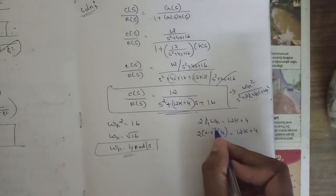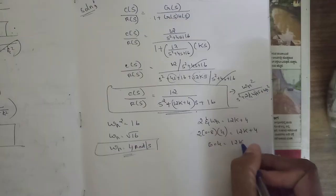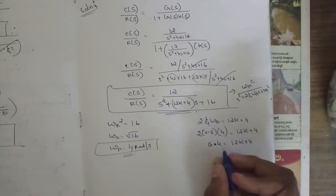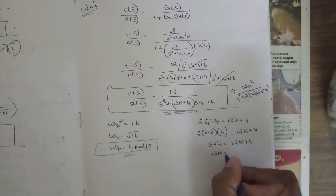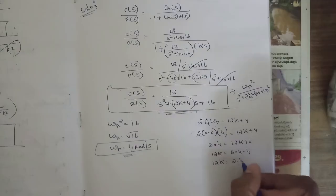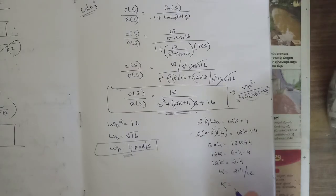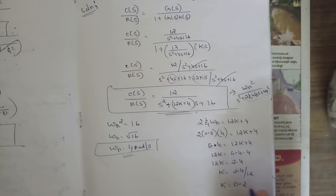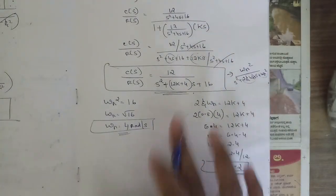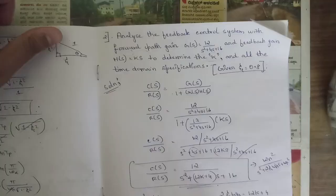Substituting ζ = 0.8 and ωn = 4: 2 × 0.8 × 4 = 12k + 4, giving 6.4 = 12k + 4. So 12k = 2.4, therefore k = 2.4/12 = 0.2. That is the value of k.